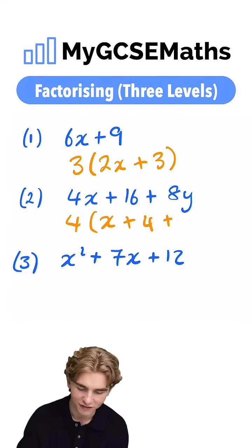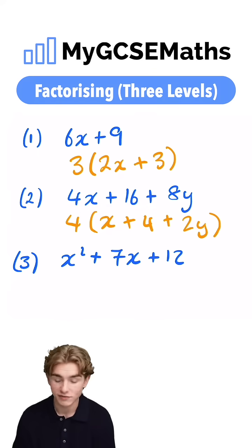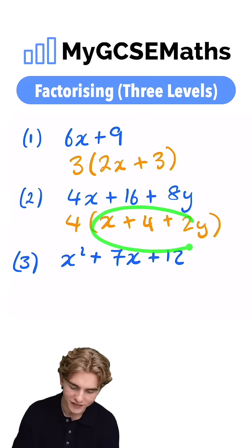Finally, what do you multiply by 4 to get 8y? You're going to multiply it by 2y. So we can write 4x plus 16 plus 8y as 4 times by x plus 4 plus 2y.